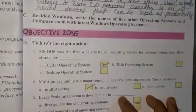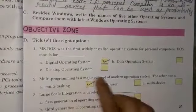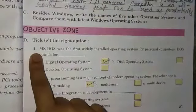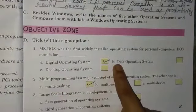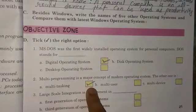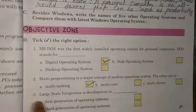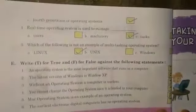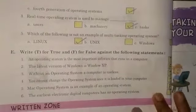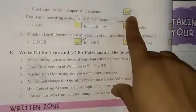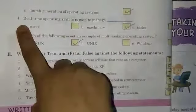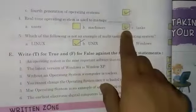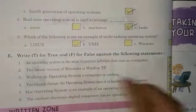Objective zone. No. 1 — A. No. 2 — A. No. 3 — C. No. 4 — B. No. 5 — A.